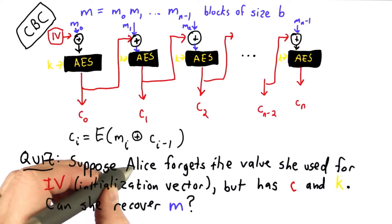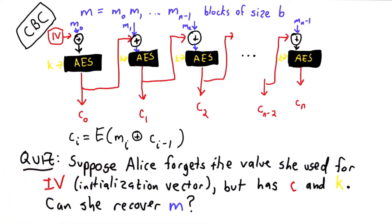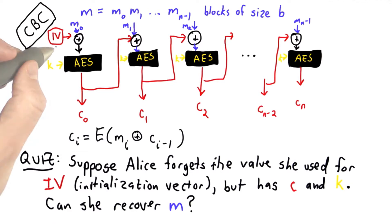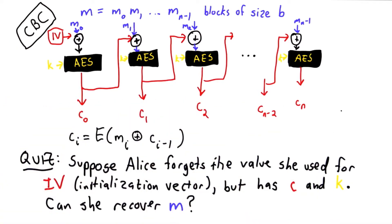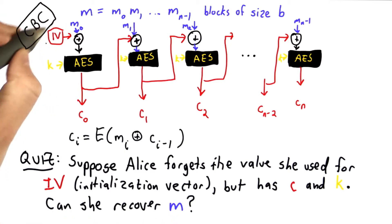So the question is: suppose that Alice forgets the value that she used for the initialization vector. She encrypted some file, she has the ciphertext, and she has the key. Can she still recover m even though she forgot the IV value?